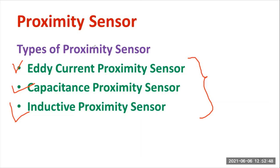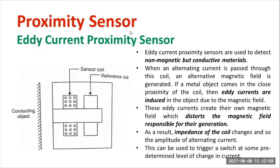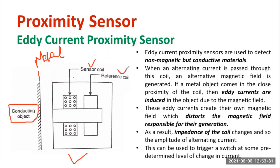Now let's understand how the eddy current type proximity sensor operates. Looking at the diagram, this is the object whose presence needs to be identified — it is a metal object. On the right side, you can see the proximity sensor part, which has both a sensor coil and a reference coil. Imagine this as a 2D diagram in a 3D manner. You need to pass a continuous current through both the reference and sensor coils.